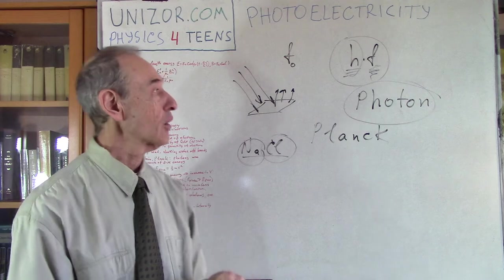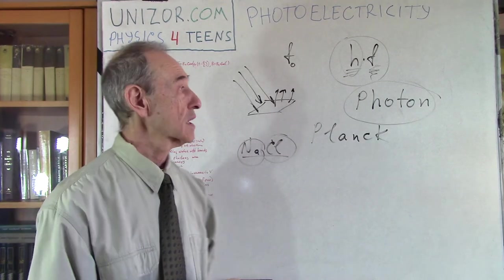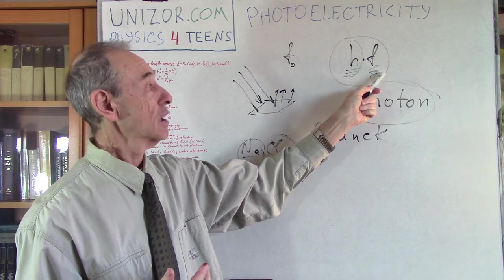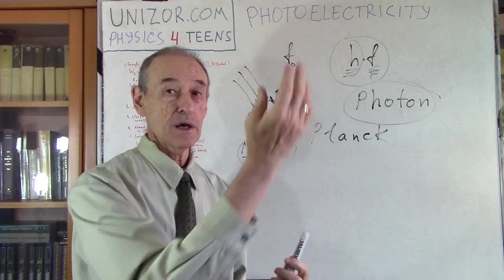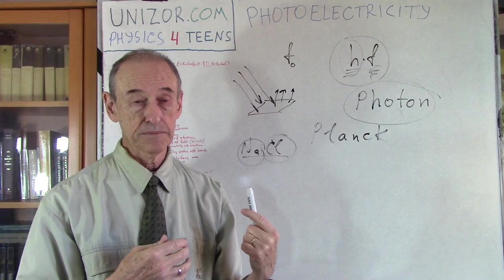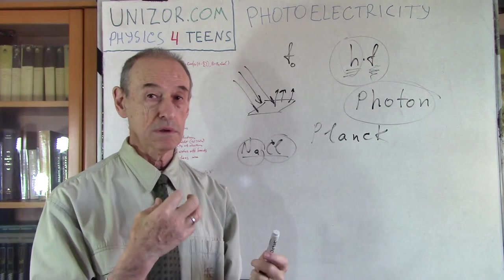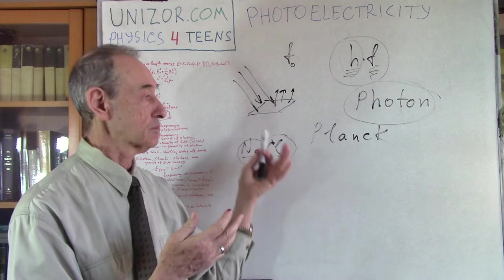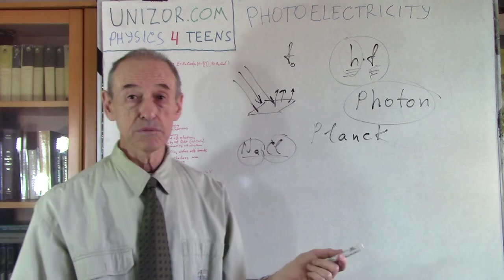That's basically how the existence of this particular threshold frequency can be explained. If the frequency carried by a photon is high enough to give this portion of energy to an electron such that the electron has enough energy to fly away from the nucleus, then we observe the photoelectric effect. If this frequency is not sufficient — and it depends on what kind of metal we are talking about, or even glass, which holds electrons probably more strongly — then we don't observe this particular effect.